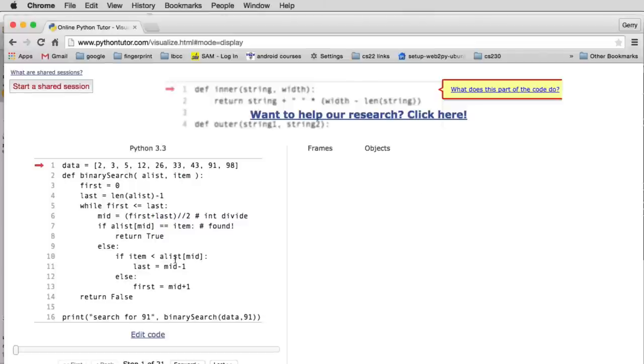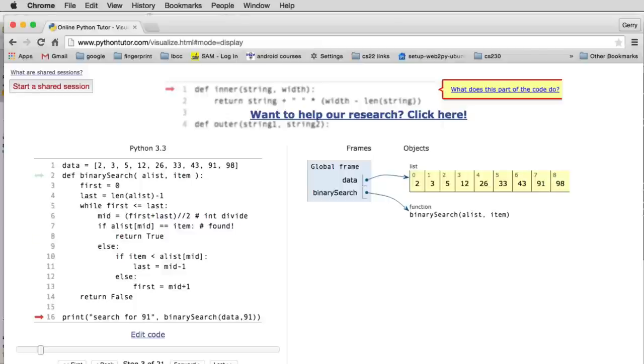So now it shows you where we're about to execute this line. And it's going to show you information over here. Now this is just setting up some data. So we'll go forward one. You can see we're at the global frame which is before we call any methods. It sets up data to point to this. We'll go forward. It skips over the definition of the function.